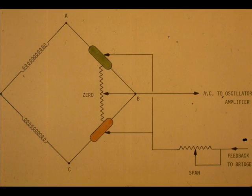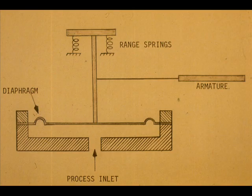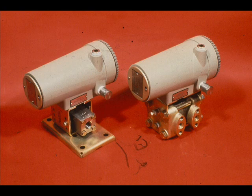The zero and span adjustment may be entirely electrical. However, the range spring capability must be within the limits of the range and span desired. A specific example of the motion balance type of electronic transmitter will be studied later in this segment.